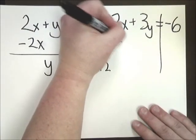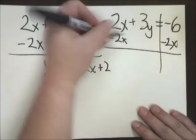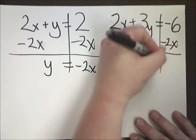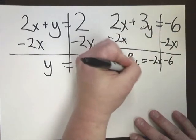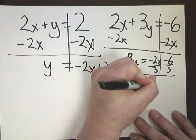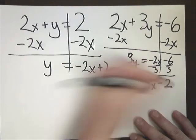On the other side, I need to subtract 2X. 3Y is equal to negative 2X minus 6. I need to divide by 3 on all the sides. Y is equal to negative 2 thirds X minus 2.